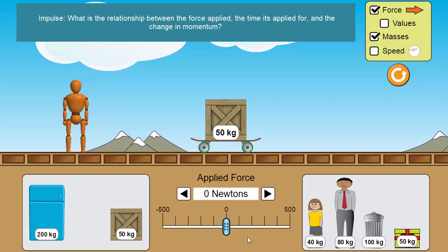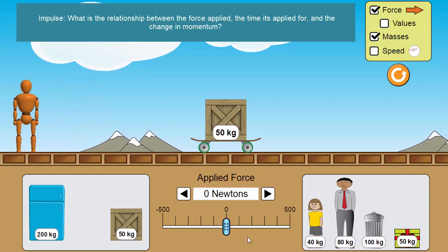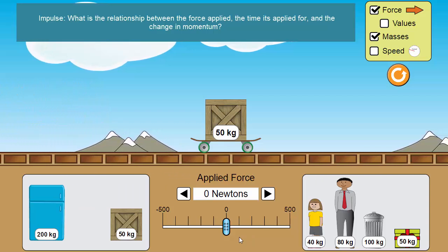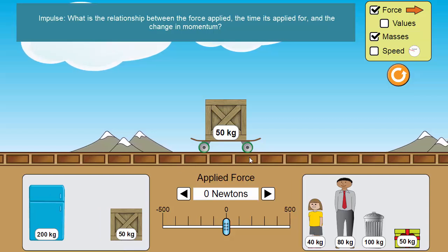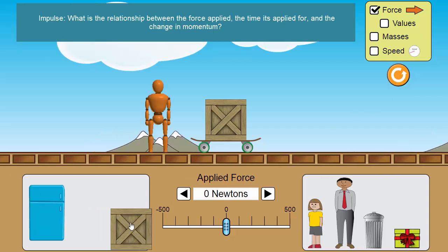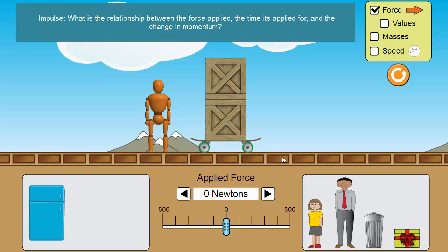Now, my question is, what's the difference between applying 50 newtons to 50 kilograms for five seconds and applying 50 newtons to 100 kilograms for five seconds?